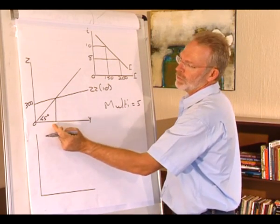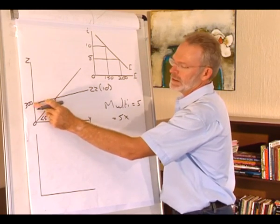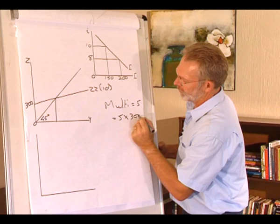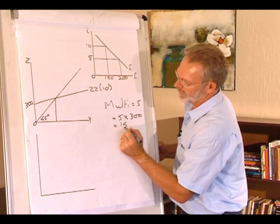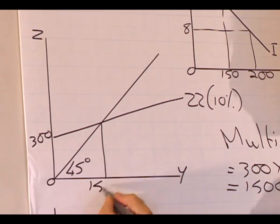The equilibrium level of income equals 5 times the vertical intercept, 5 times 300, and that is 1500. So the equilibrium level of income is 1500.